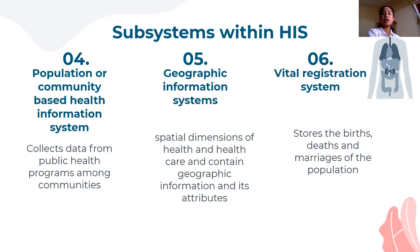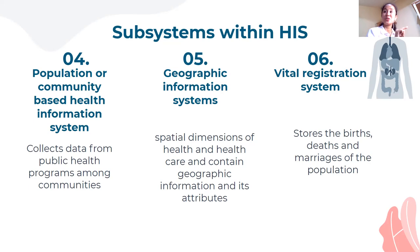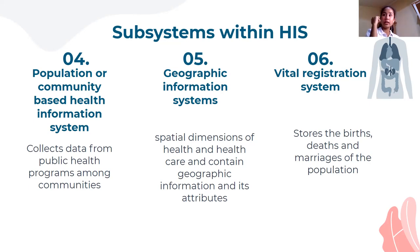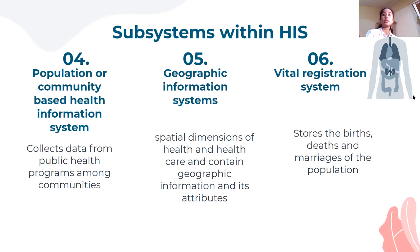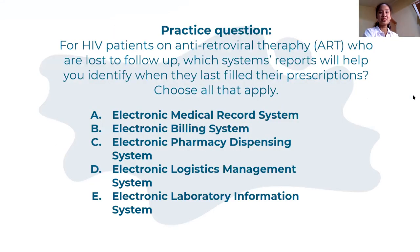And finally, number six: vital registration systems. Where do you get a birth certificate from? That government office uses a vital registration system. It collects data on the number of deaths, births, and other vital events of the population — death certificates, birth certificates, and marriage certificates are all part of this system.